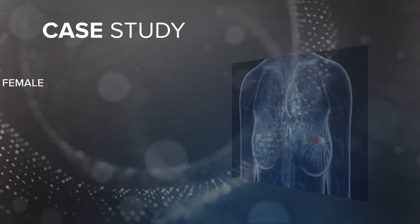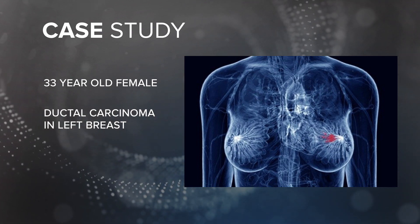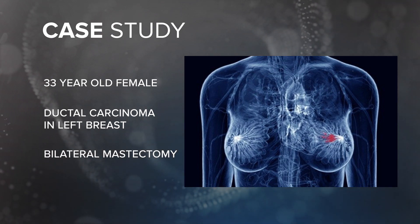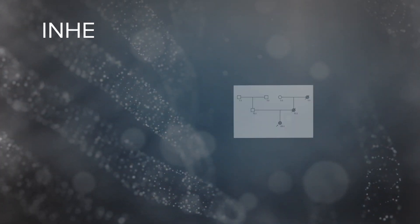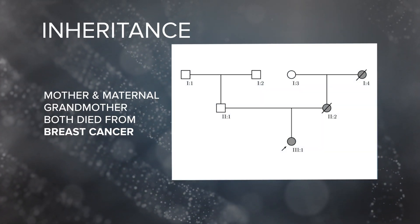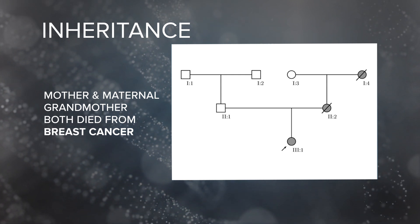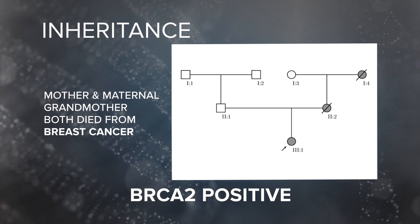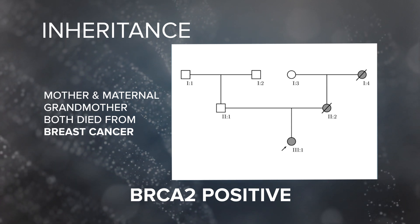Let's put this into a real-life scenario that you might encounter on the job. Your patient is a 33-year-old female presenting with invasive ductal carcinoma in the left breast. She has opted to undergo a bilateral mastectomy in hopes of removing the cancerous tissue. You find out that both her mother and maternal grandmother died from breast cancer in their early 40s. Due to the familial pattern, you order a breast and ovarian cancer panel test, which comes back positive for a BRCA2 mutation. How does this information affect your decisions surrounding recommendations for your patient?